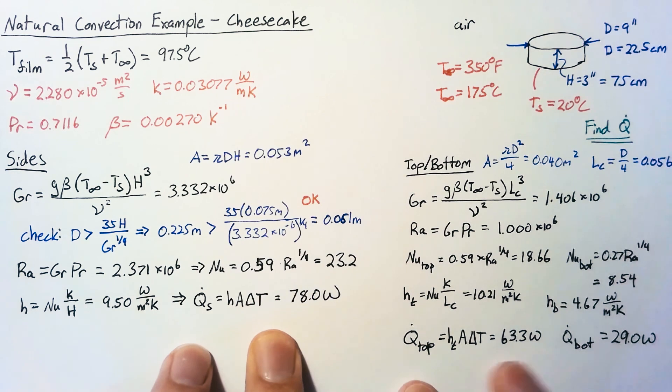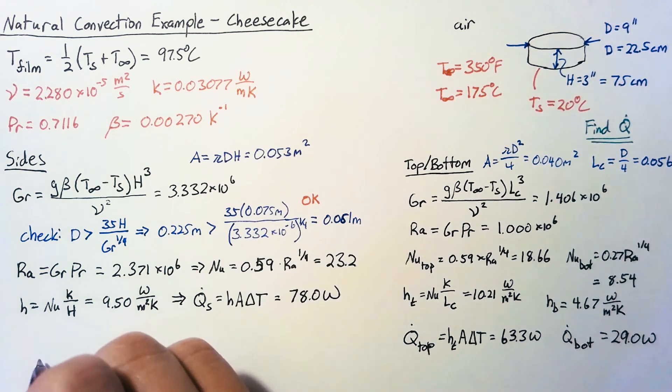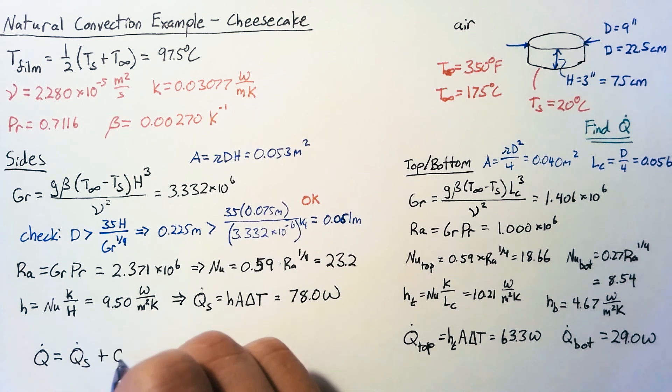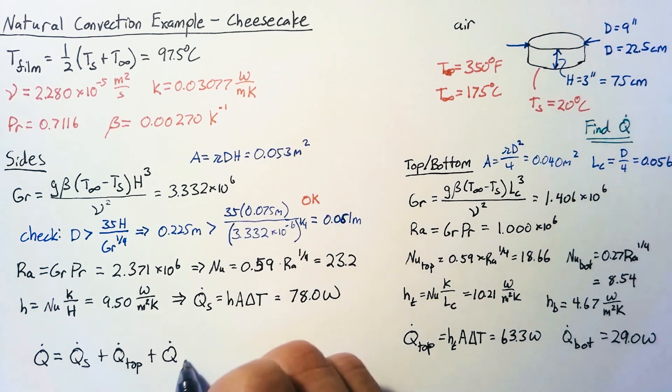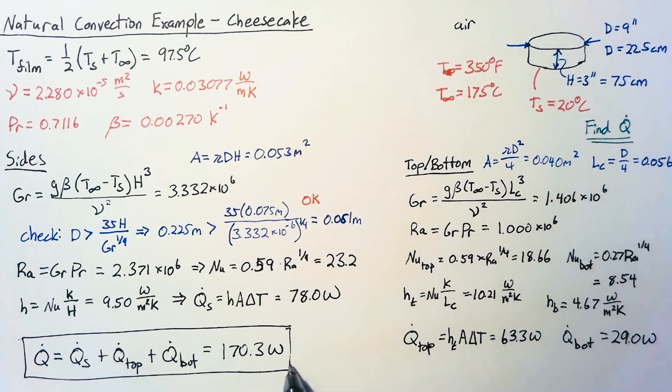So now we have the heat transfer into the sides, we have the heat transfer into the top and into the bottom so our final step is to find the total Q dot and our total Q dot is just the Q dot from the sides plus the Q dot from the top plus the Q dot from the bottom and all together the 78 plus 29 plus 63.3 gets us 170.3 watts and this right here is our final answer.